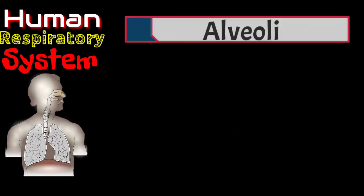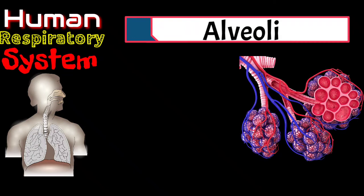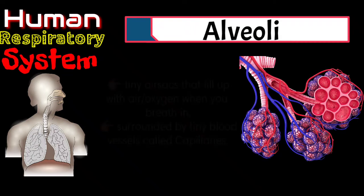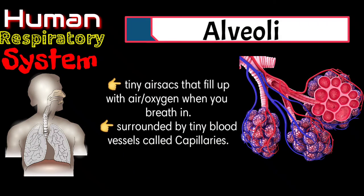And last is the alveoli. Alveoli are tiny air sacs that fill up with air or oxygen when you breathe in. Your alveoli are surrounded by many tiny blood vessels called capillaries. Alveoli, known as the air sacs, look like a cluster of grapes.